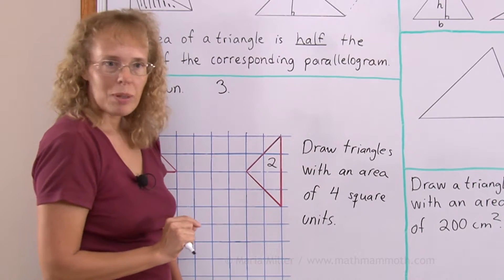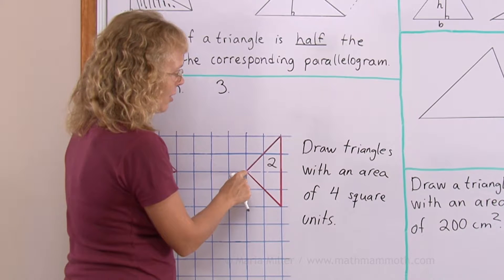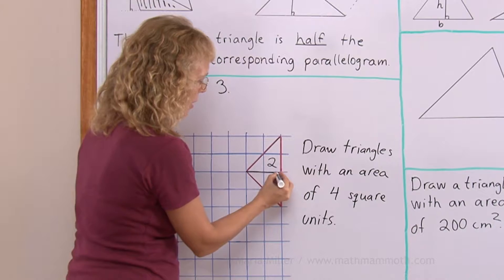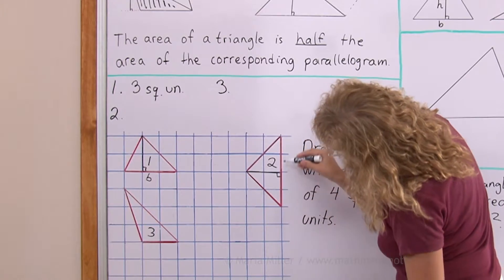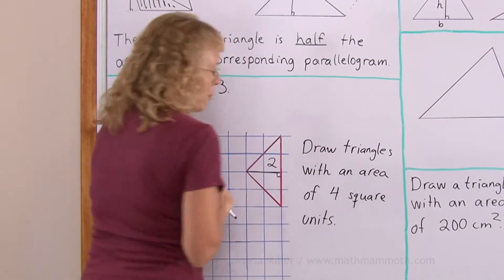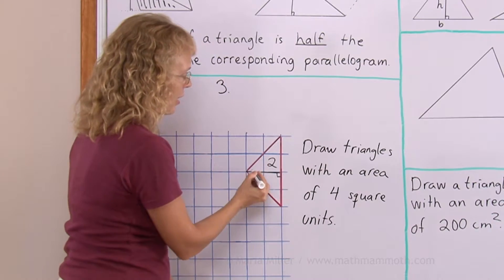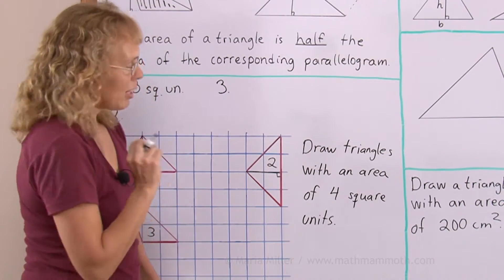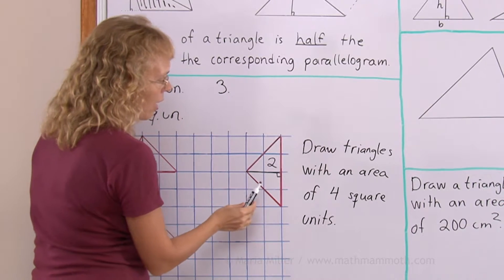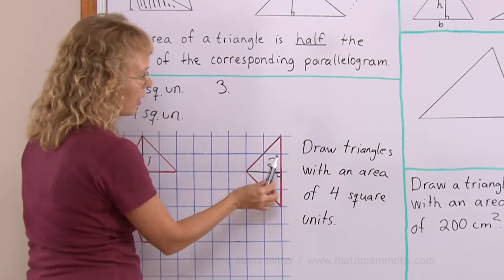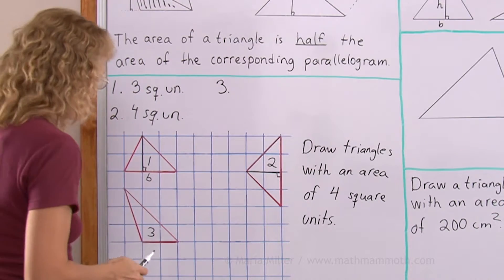Here, I can choose my base side to be this one — four units. Then I go to the top corner, and the altitude will be here, at a right angle with the base. You can kind of turn your head and look at it this way, so the base is like the bottom side. You can choose any side to be base. Base is four units, altitude is two units. Four times two is eight, divide by two — four square units. You can count the squares: there are two whole squares, and parts that combine into a third and fourth. Exactly four.